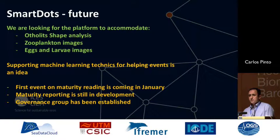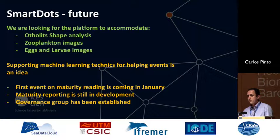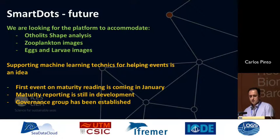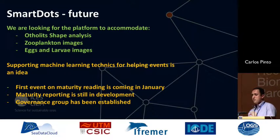For the future, we expect to extend this software to more types of events. Like the maturity event — we haven't done one yet, and the first is planned for January of next year. A governance group has been established to manage the SmartDots platform. We are also thinking about applying machine learning techniques, especially for shape analysis of otoliths, because then you can identify if the fish is from one stock or another. We also have the idea to apply it to other images like eggs or plankton.